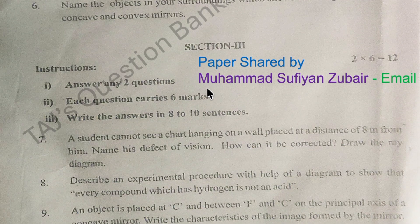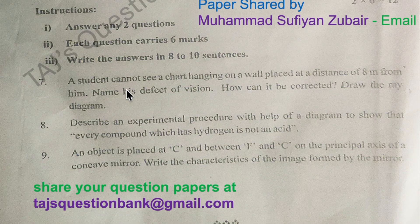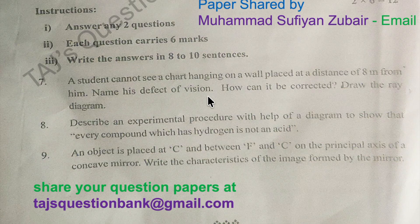We thank once again Mohamad Sufyan Zubair for sharing his paper. Coming to the seventh question: a student cannot see a chart hanging on a wall placed at a distance of 8 meters from him. Name his defect of vision, how can it be corrected, and draw the ray diagram.